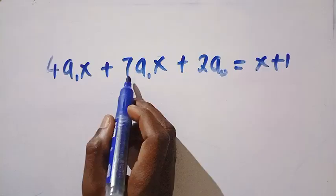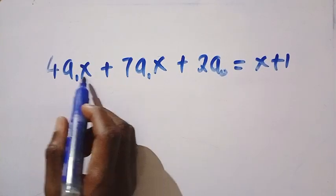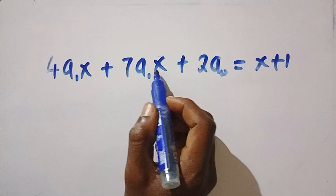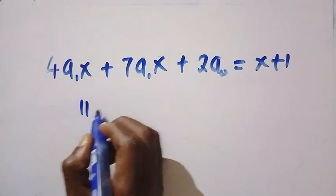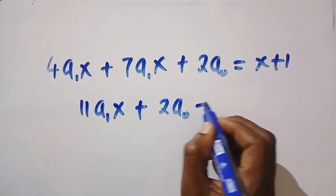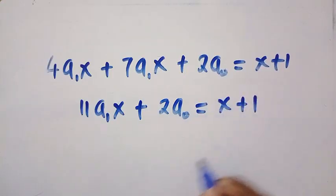So by adding these together, but before that, what is coming here is a_1 x and this is a_1 x. So 4 plus 7, it gives us 11a_1 x plus, here is 2a_0 equals x plus 1.